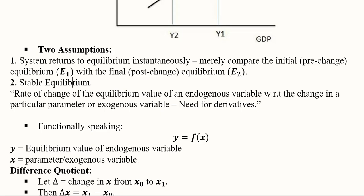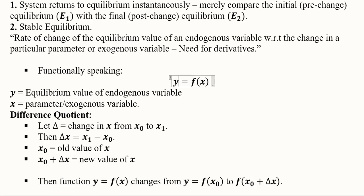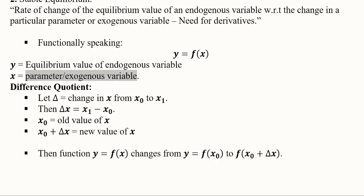Functionally speaking, the equilibrium value of the endogenous variable is y and the parameter or exogenous variable is x. We address this mathematically using the difference quotient. Change is represented with delta — if there is a change in x, it moves from its initial value x0 to the next value x1. The difference x1 minus x0 equals delta x.